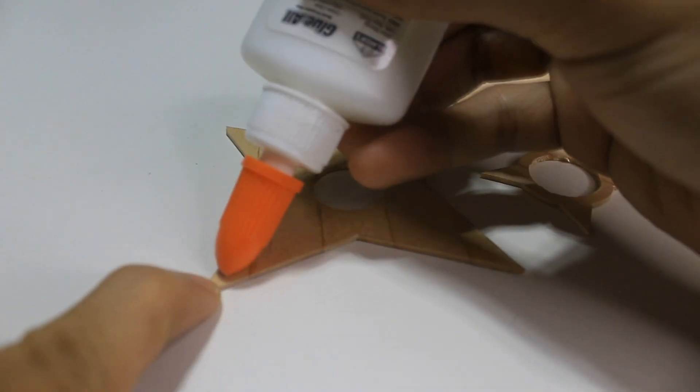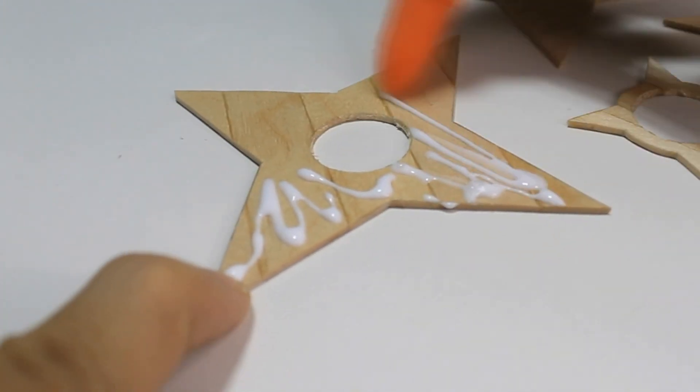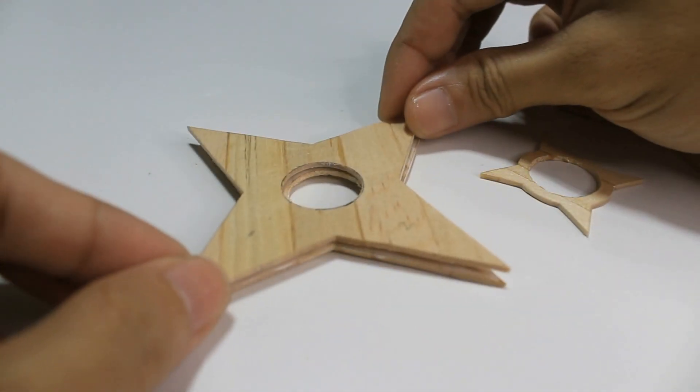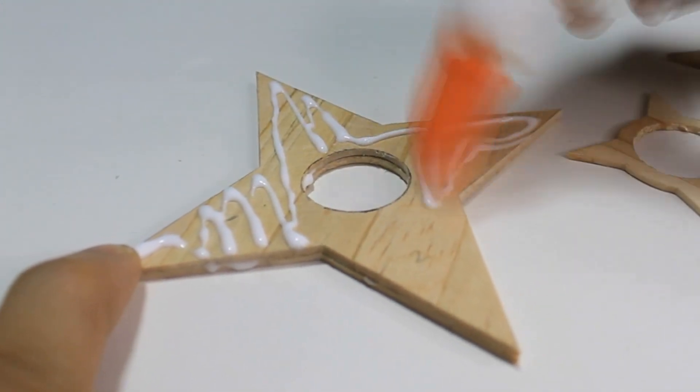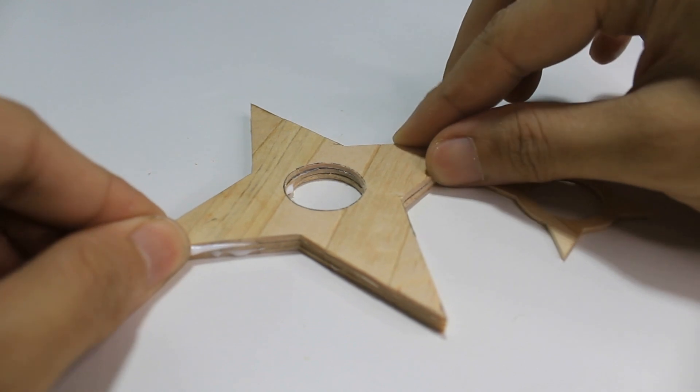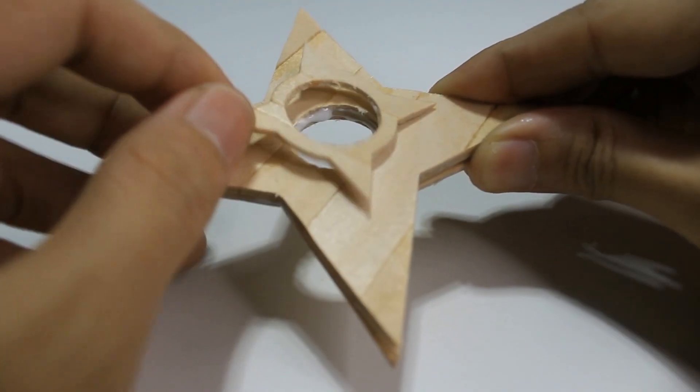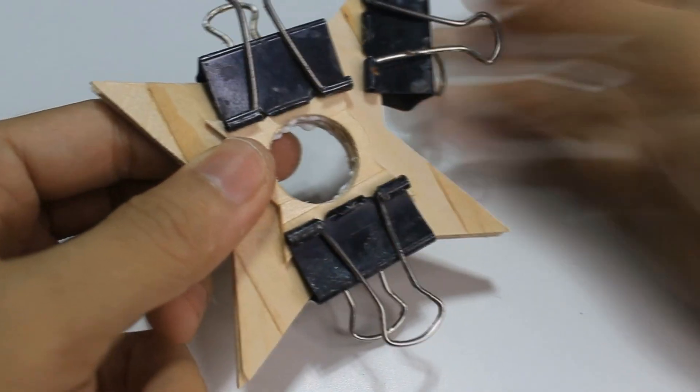I use Elmer's glue to fill them together. Scatter it around the surface. Repeat the gluing process. Then clip it using a binder clip while waiting for it to dry.